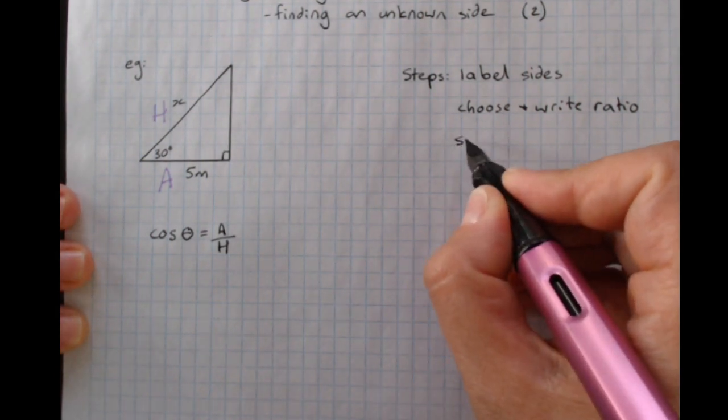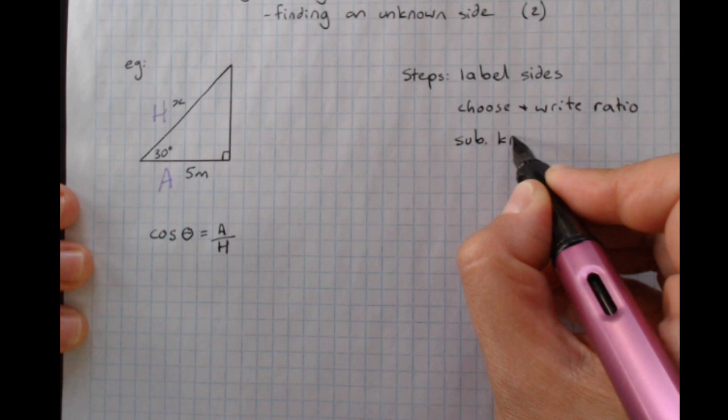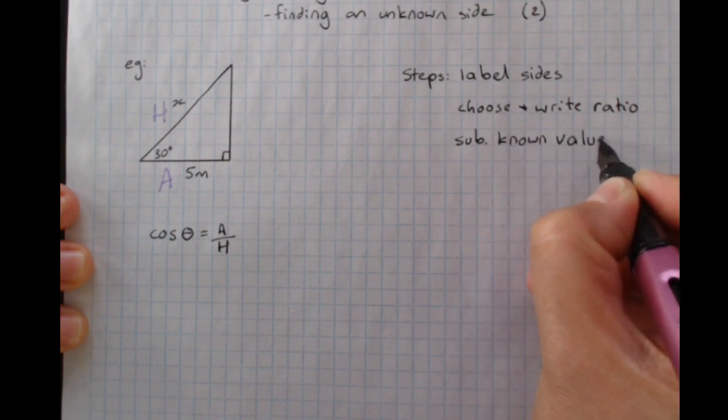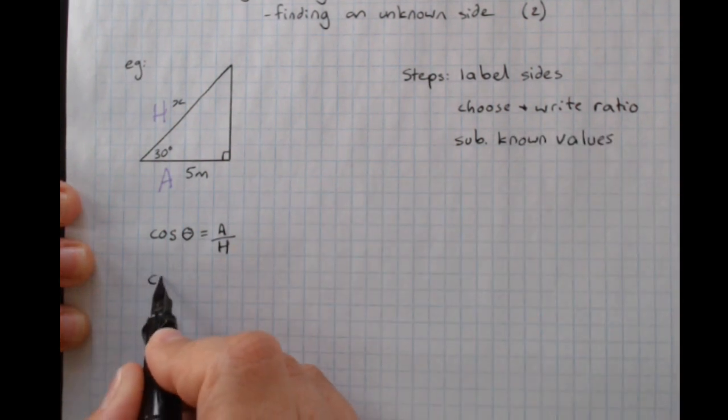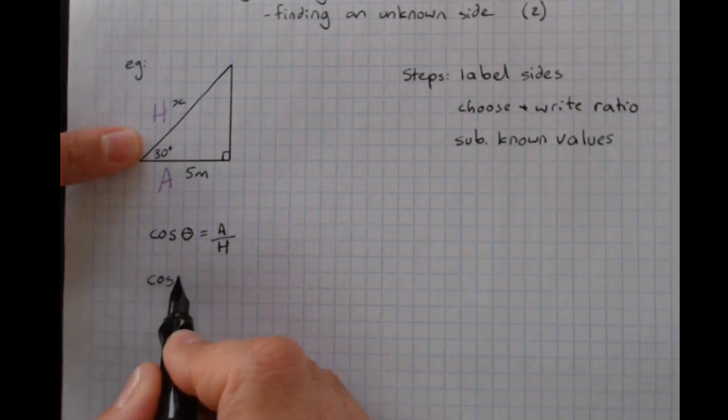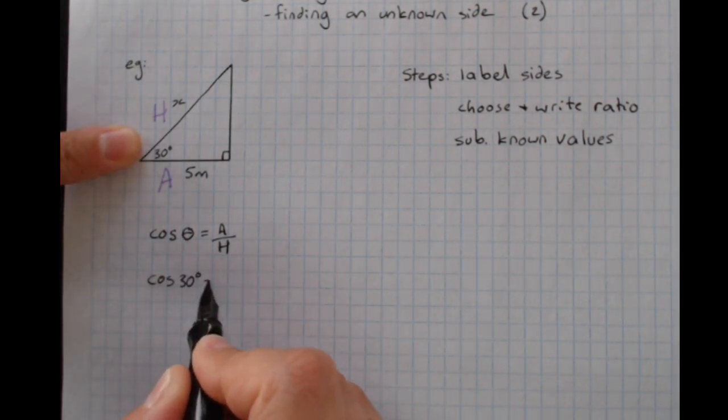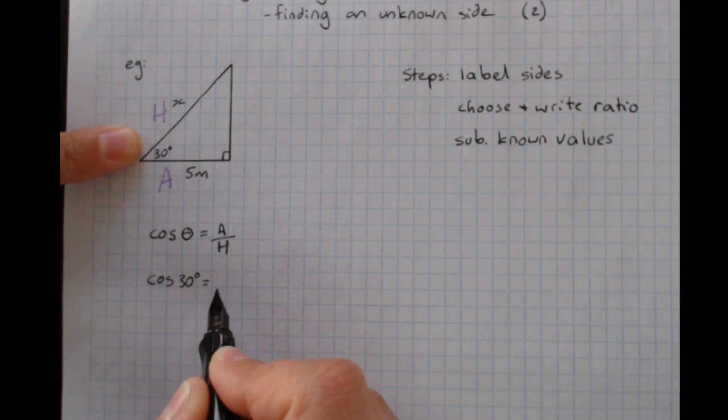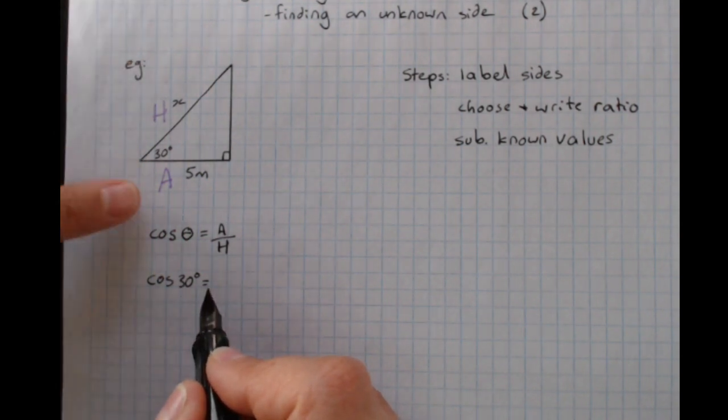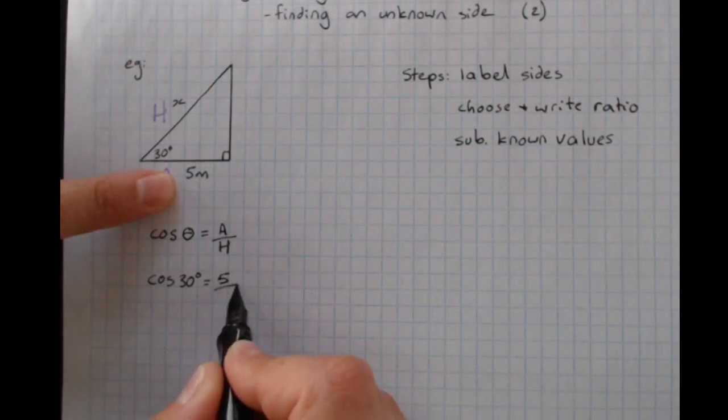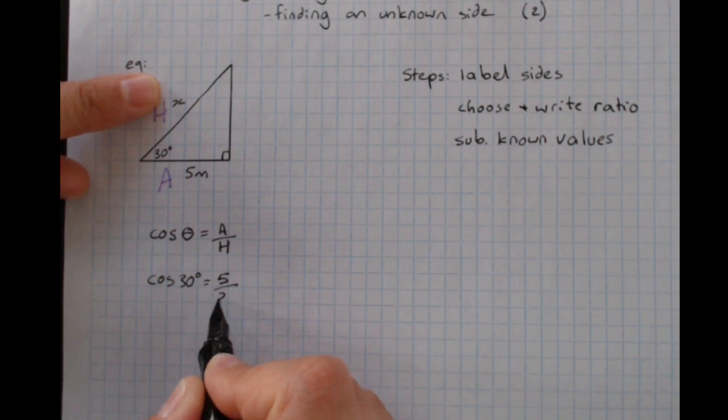The next step is always to substitute the known values. Cos of the angle and the angle is 30 degrees, don't forget the degrees sign, equals, the adjacent is 5, the hypotenuse is x.